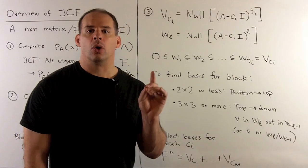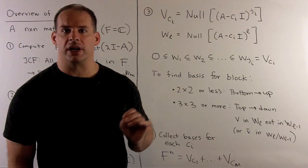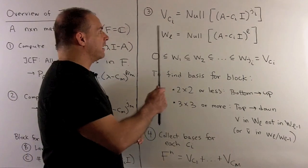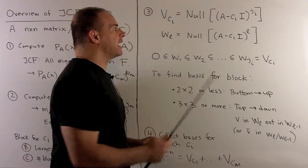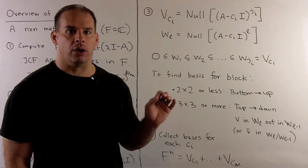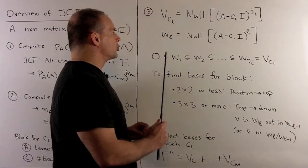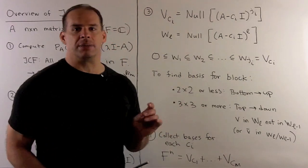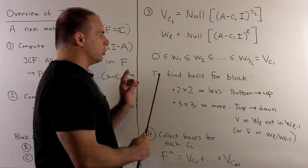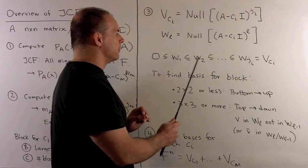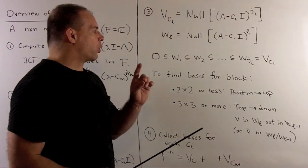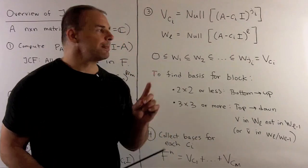If we want more information about our blocks, or to find a basis that puts A in Jordan canonical form, we need to look at null spaces beyond our eigenspaces. Fixing an eigenvalue C sub i, we define V sub C sub i as the null space of (A minus C sub i times the identity) raised to the J sub i power, where J sub i is the exponent from the minimal polynomial. We define W sub l as the null space of (A minus C sub i times the identity) raised to the l-th power. This gives a chain of inclusions: 0 ⊂ W_1 ⊂ W_2 ⊂ ... ⊂ W_{J sub i} = V sub C sub i. All the information needed for the block corresponding to C sub i is contained in this chain.